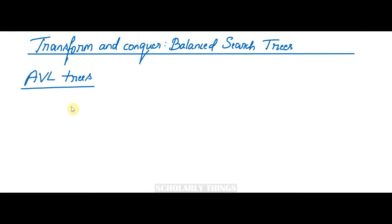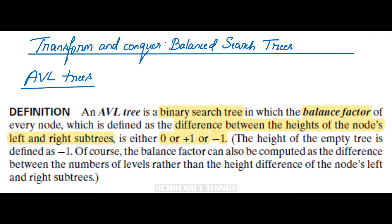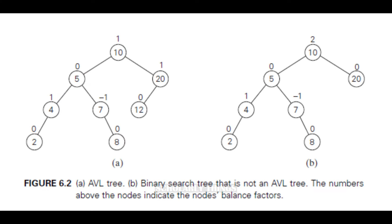An AVL tree is named after its inventors. It is defined as a binary search tree in which the balance factor of every node — defined as the difference between the heights of the node's left and right subtrees — is either 0, +1, or -1. The height of an empty tree is defined as -1. Figure A shows a valid AVL tree with balance factors of 0, -1, or +1, while Figure B is a BST that is not an AVL tree because it has a balance factor outside that range.